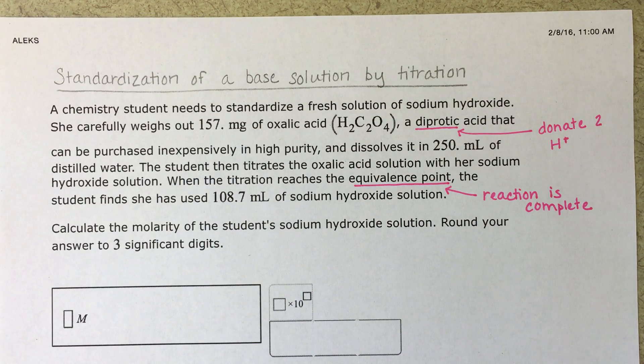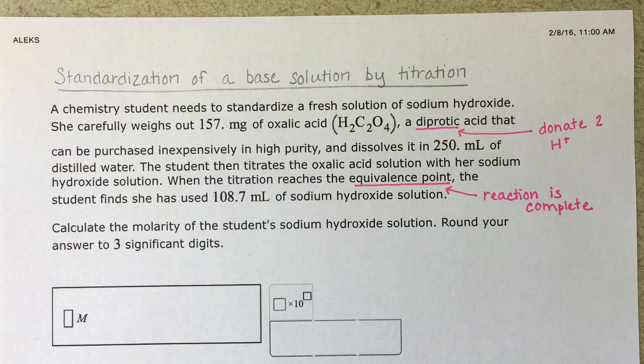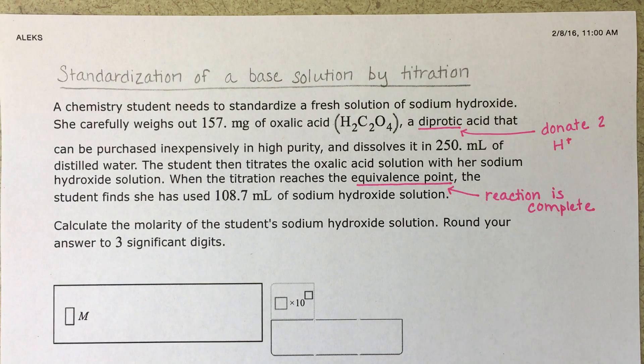And whenever you're working with acids that donate more than one H plus, it's always going to tell you that by calling it a diprotic acid, or triprotic acid would donate three.